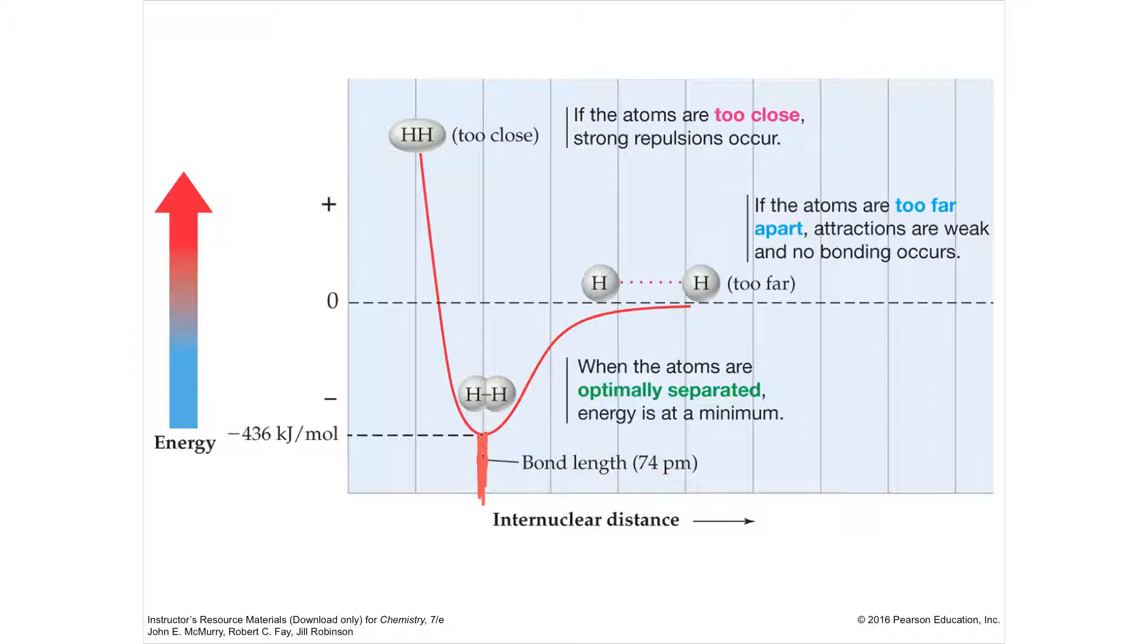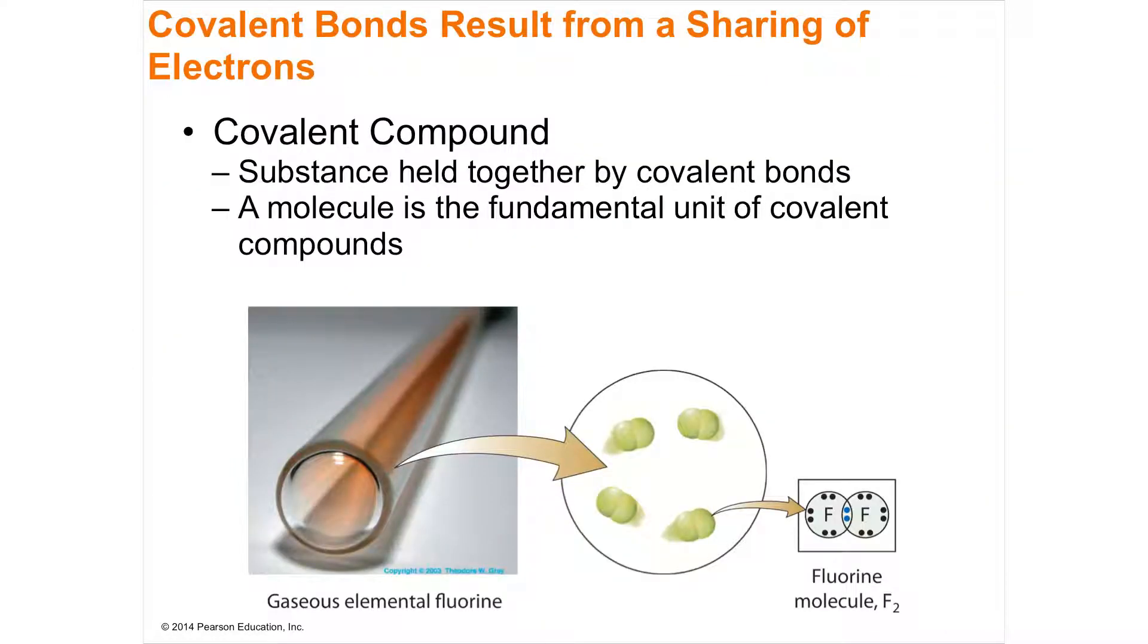So if you have a covalent bond, the molecule that's formed is called a covalent compound. The compound is just more than one thing. Normally a compound is going to be two or more substances. This is an example of a molecule of fluorine. Molecules normally are covalent. So you can have a molecule of fluorine, but a covalent compound normally having more than one type of matter that's coming together.